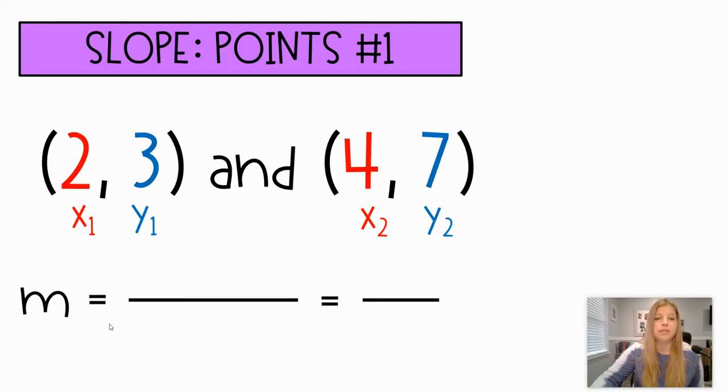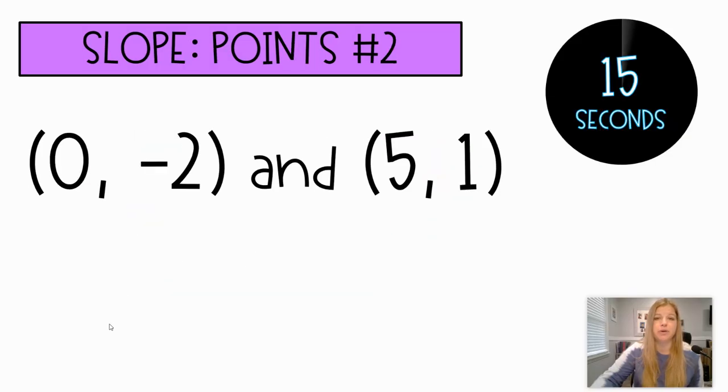Okay. So you would subtract your y, so 7 minus 3, over subtract your x's, 4 minus 2, and get 4 over 2, which is actually just 2, is your slope. That's how easy this is. So that's why we can do this pretty quickly in 15 seconds. You're just subtracting your y's, over subtracting your x's, and then simplifying wherever you can.